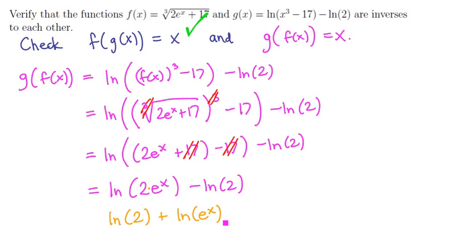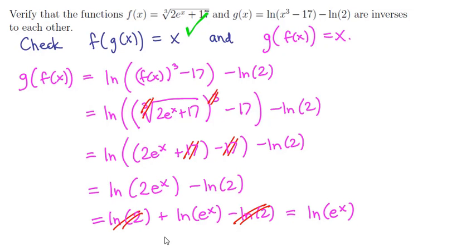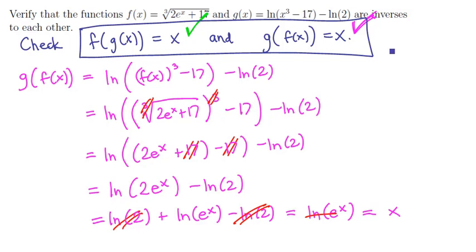And then I have that minus ln of 2. Notice that the first ln 2 and the last ln 2 cancel, and so we get the natural logarithm of e to the x. Since the natural logarithm and e to the x are inverses, they cancel, and I'm left with x. That means the second condition is met. And since both conditions are met, that means that f and g are, in fact, inverses to each other.